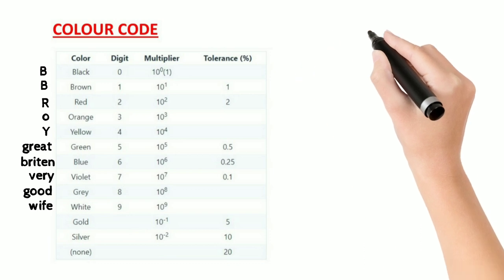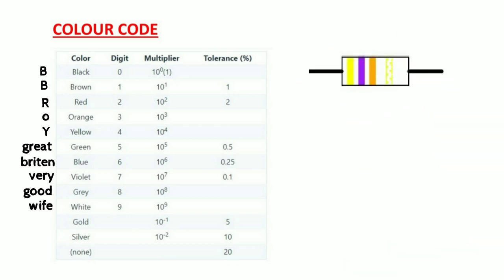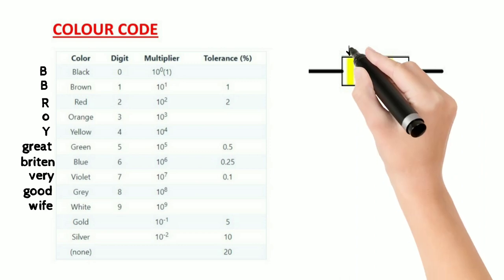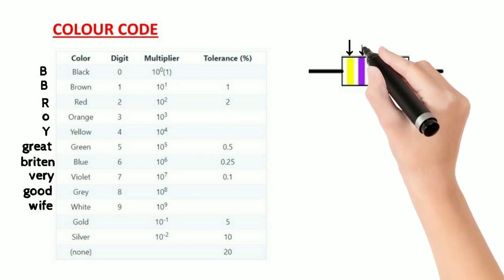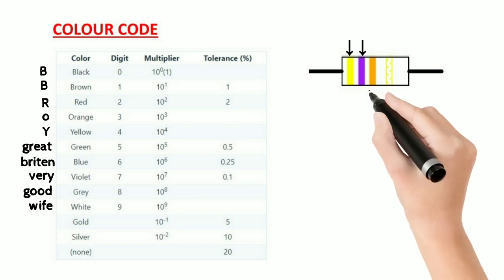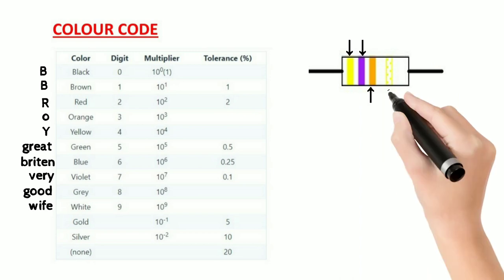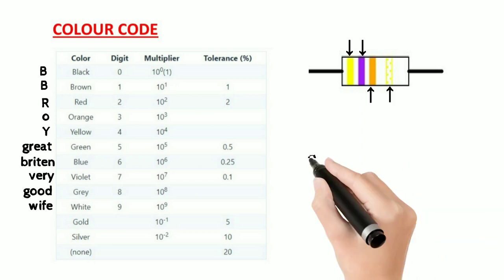Roy of Great Brighton has very good wife. Let's see this example. First two colors denote the numerical value. Therefore yellow and violet denotes 4 and 7. Third color denotes multiplier. Orange denotes 10 to the power 3. Fourth color denotes tolerance. Gold denotes tolerance plus minus 5 percent.